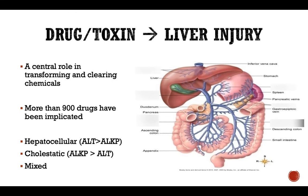When ALT is much higher than ALP, we call it hepatocellular injury — a hepatocellular pattern on the blood work. ALT is a leakage enzyme, and certain toxins will specifically damage the hepatic cells and predispose leakage of ALT into the bloodstream, which you will note on your chemistry panel.